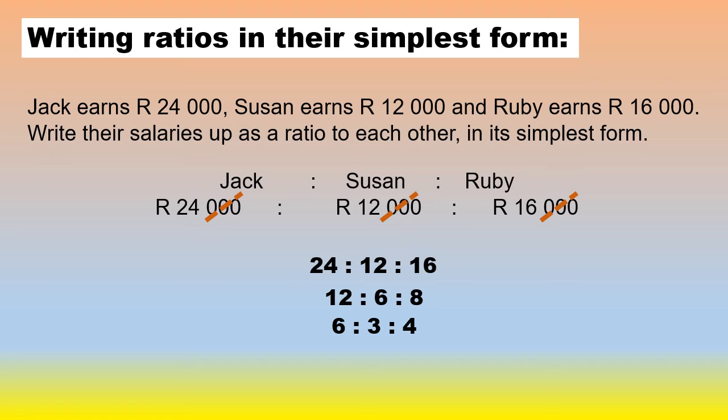If you only have two ratios that you have to write in its simplest form, the easiest way is to put it into your calculator. If it is 12 to the ratio 16, you put it in as a fraction 12 over 16, press your equal button, and it will give you the simplest form.